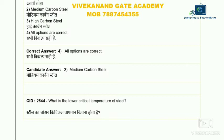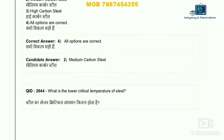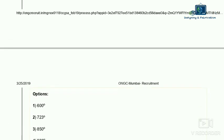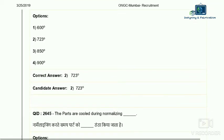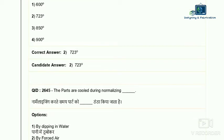Question 43: what is the lower critical temperature of steel? The upper critical point varies but the lower critical temperature is fixed. Options are 600, 723, 850, and 900 degrees Celsius. The correct answer is 723 degrees Celsius — this applies both on heating and cooling.